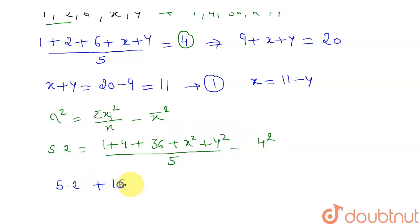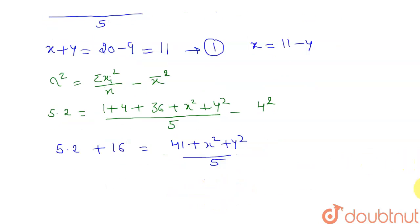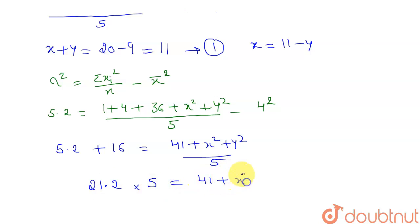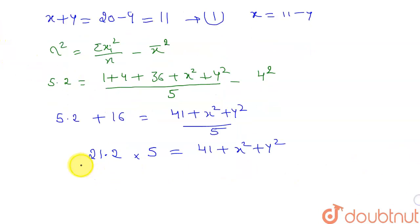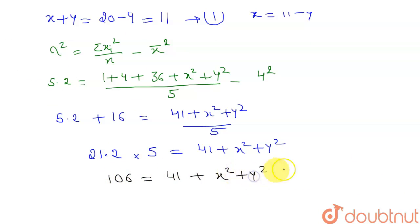Four squared is sixteen. Moving it to the left side, it becomes plus sixteen. So: 16 plus 5.2 equals 21.2, and 1 plus 4 plus 36 is 41. So we have: 41 plus x squared plus y squared, divided by five, equals 21.2. Multiplying both sides by five gives: 41 plus x squared plus y squared equals 106.